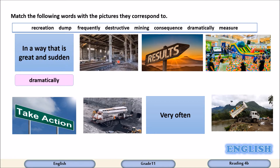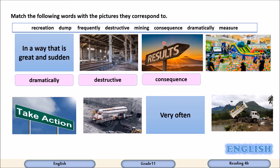Look at the second picture. How can you describe the place? Something destructive happens. Look at the third one — results of something. Consequence.